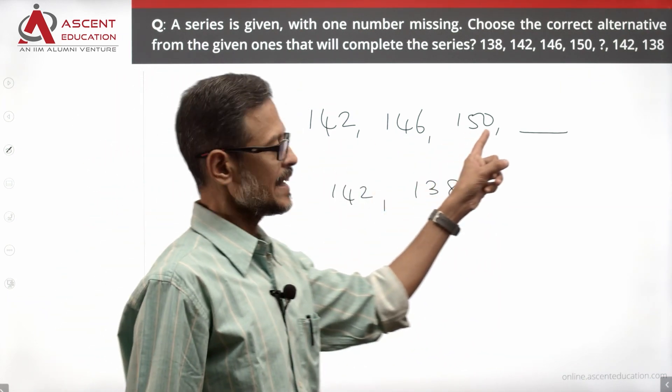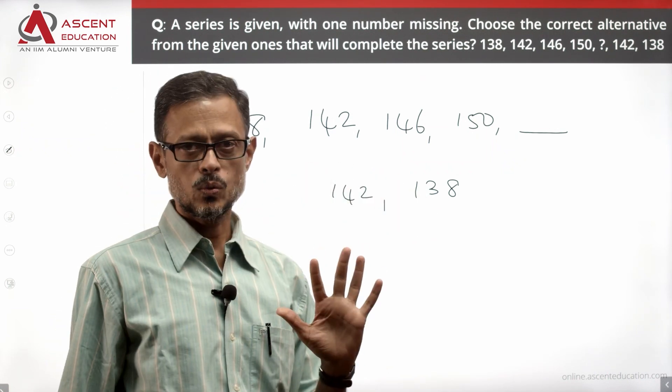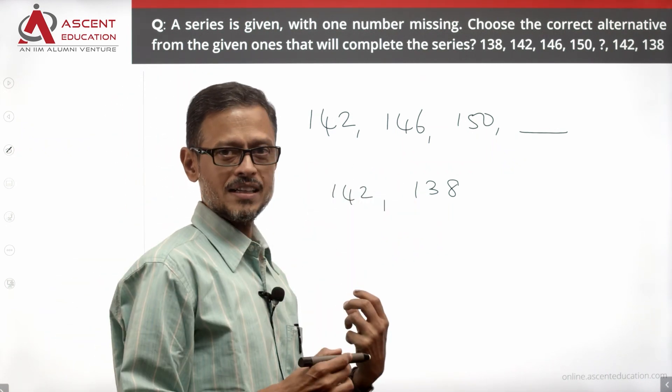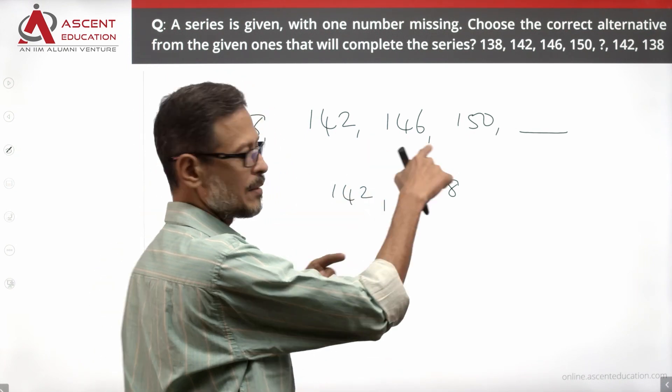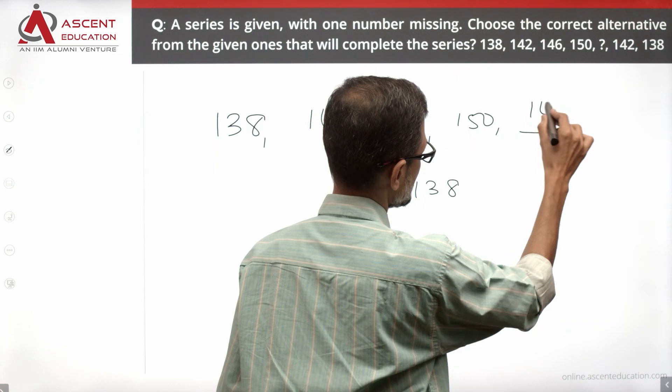The series goes up to 150, then comes back down to 138. The difference between these numbers is 4. So the missing number is 146.